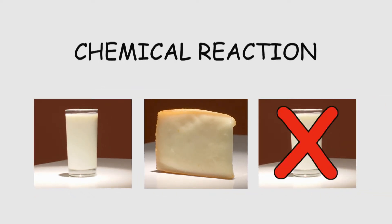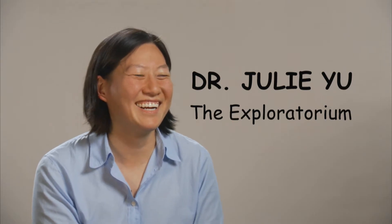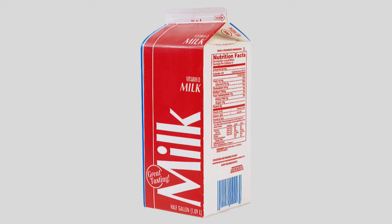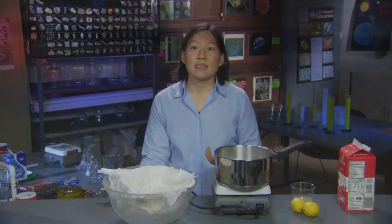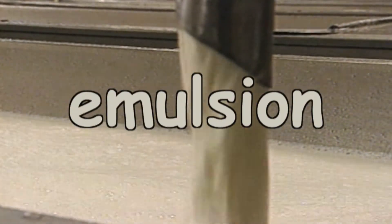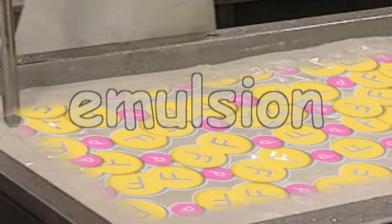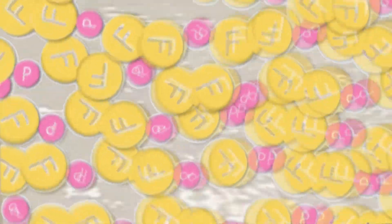Here's why — we're going to make the world's simplest cheese. Julie Yu, a scientist at the Exploratorium in San Francisco, funded by the National Science Foundation, starts with milk. Milk is composed of proteins, fats, sugars, and water. The process of making cheese is essentially removing that water so that you're left with a concentrated mass of the proteins and fats.